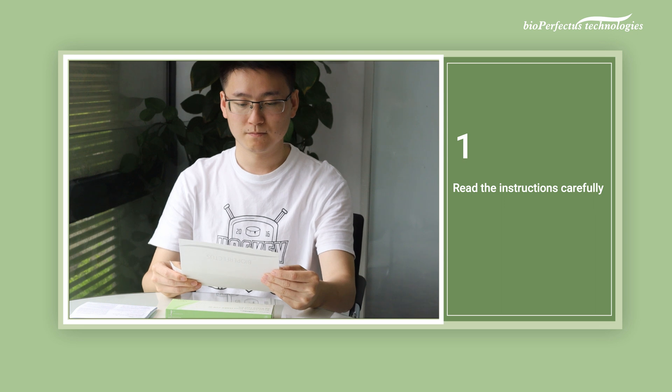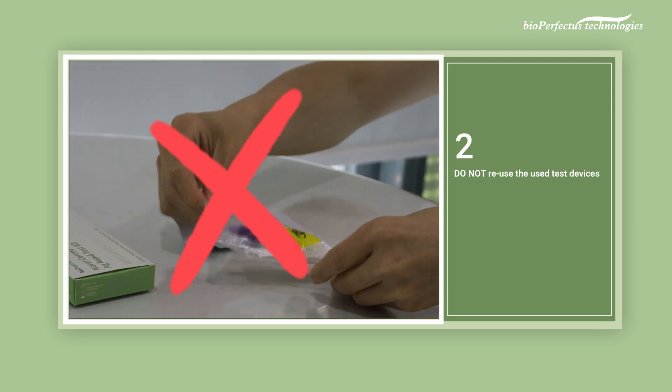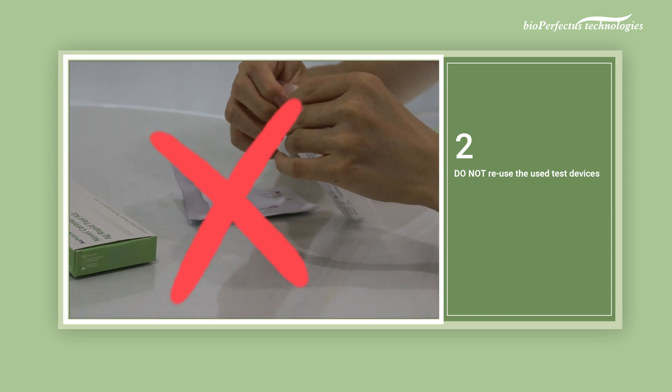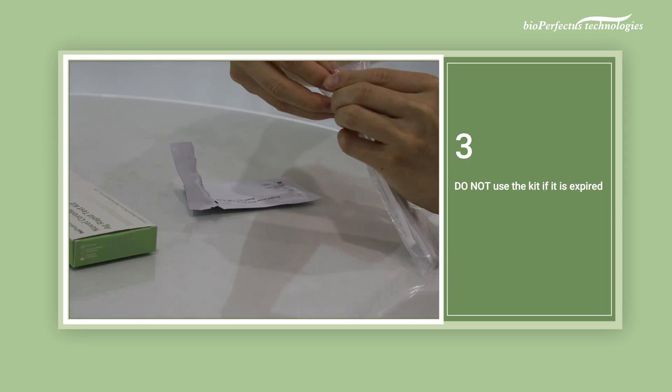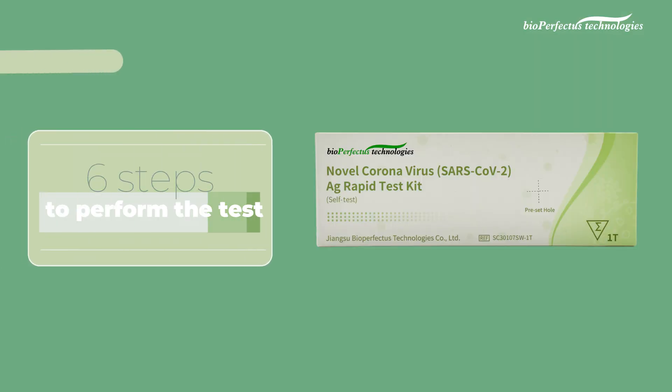There are some precautions you need to notice before you start to perform the test. First, to obtain correct results, read the instructions carefully before starting the procedure. Second, all test pieces are single-use items. Do not reuse the used test devices, tubes, or swabs. Third, check the expiration date carefully, do not use the kit if it is expired. Six steps to perform the test.